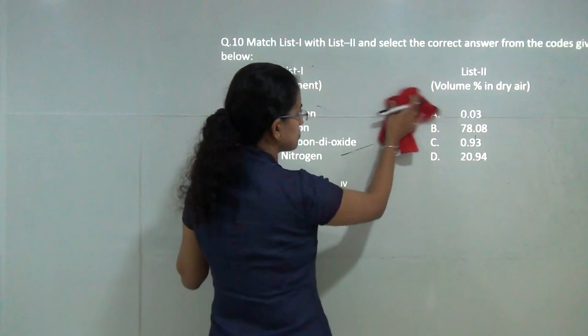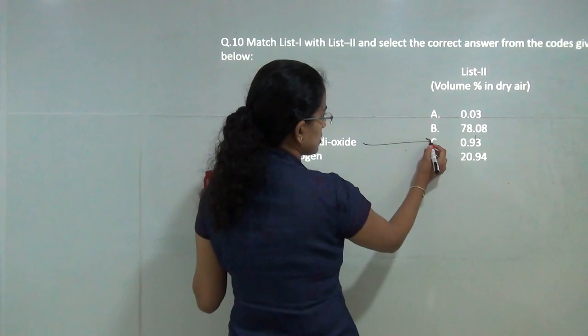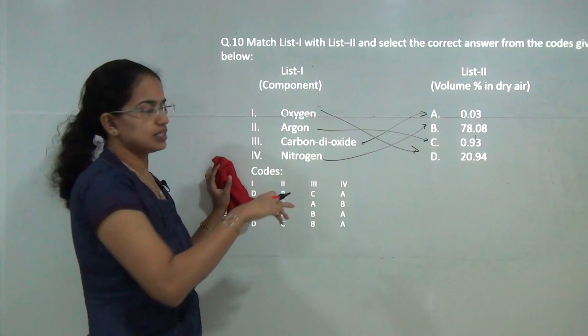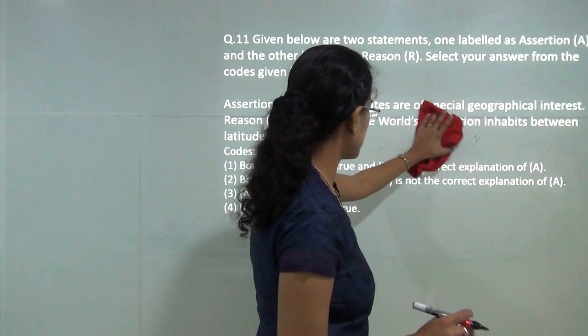Next is the amount of the volume in the dry air. Carbon dioxide is the least, that is 0.03 percent. Then you have argon as 0.93, nitrogen is maximum that is 78 and oxygen is nearly 21 percent. This is the correct match for this question.